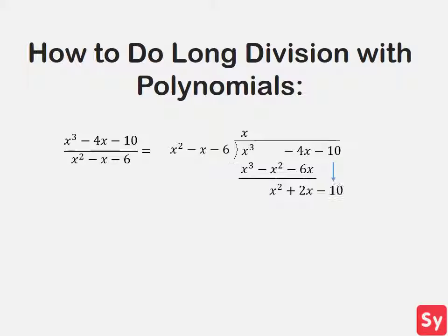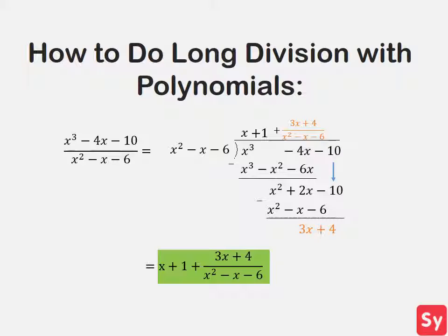Then we bring down the negative 10 and get x squared plus 2x minus 10. We next put down a 1 and multiply the denominator by 1 because it is already x squared. We subtract and get 3x plus 4, which is our remainder. So we put the remainder over the denominator and add it on top. This is our rewritten fraction after using long division. If we wanted to rewrite it even more, we could use partial fraction decomposition to break down the remainder into simpler fractions.